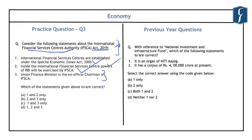Besides the financial regulators, two members come from the Ministry of Finance and two are appointed on the recommendations of a search committee, with a term of three years subject to reappointment. Hence the third statement — that the union finance minister is the ex-officio chairman — is incorrect. By eliminating it, options B, C and D are ruled out. Both statements one and two are correct, so the correct answer is A, that is 1 and 2 only.